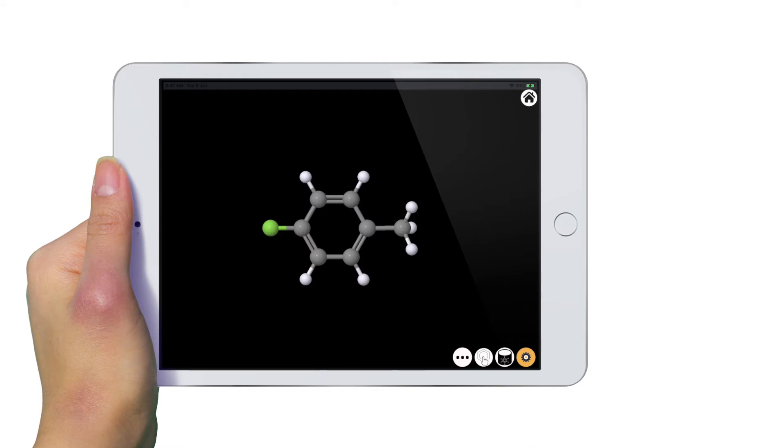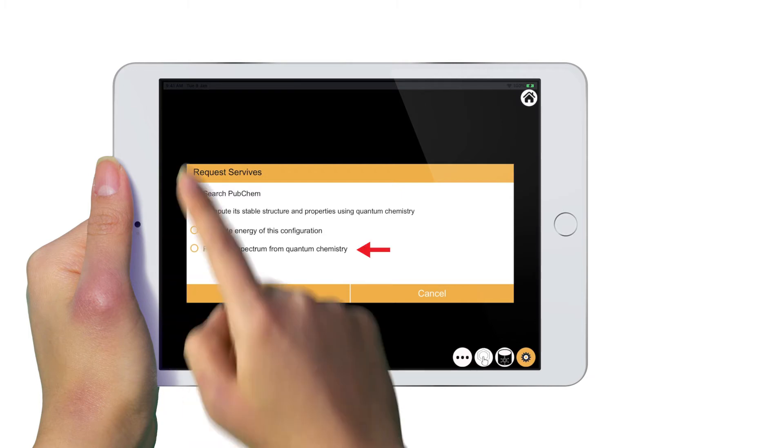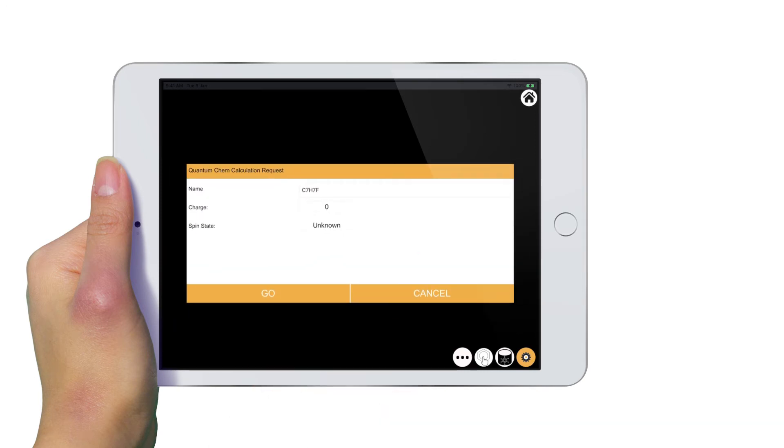After building a molecule of interest, you can request different options currently available by tapping on the request services button. Here you can request to search information at the PubChem public database or compute the molecule structure and its properties using quantum chemistry or predict its infrared spectrum. Let's compute the molecular structure and properties first.